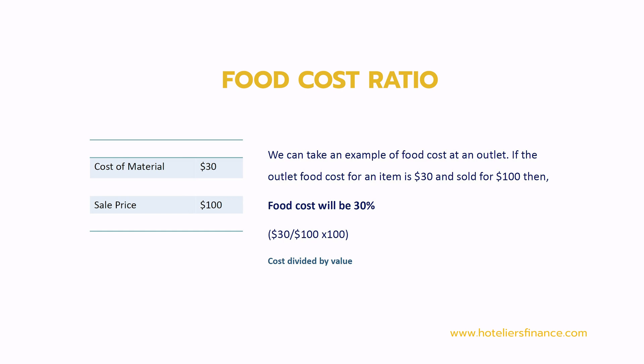The cost value ratio is used in food cost and beverage cost and in many data-driven decisions. In simple terms, when the cost divided by value equals 100%, it means cost and value are the same. When this percentage goes down, it means we start generating more value. To use a food cost example: if an outlet's food cost for an item is $30 and it is sold for $100, the food cost is 30% — cost divided by value — and that is the cost value ratio.